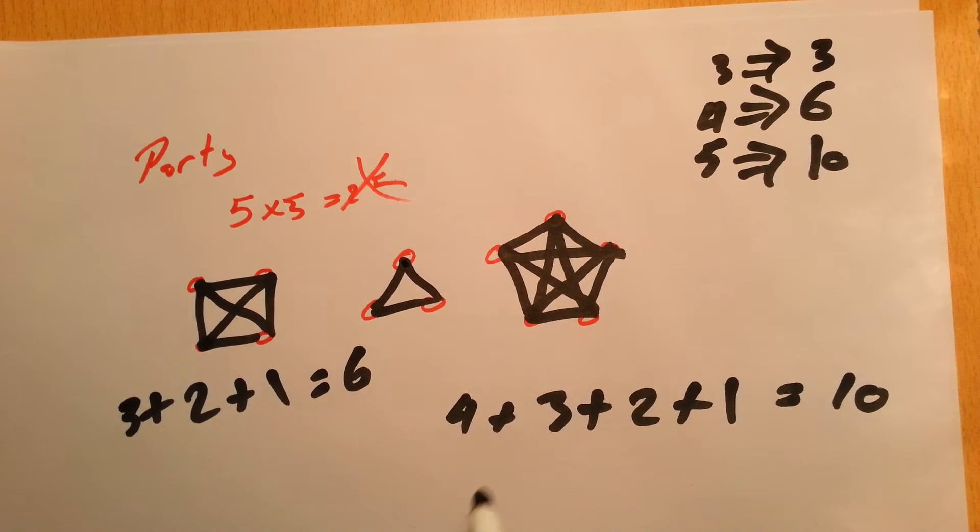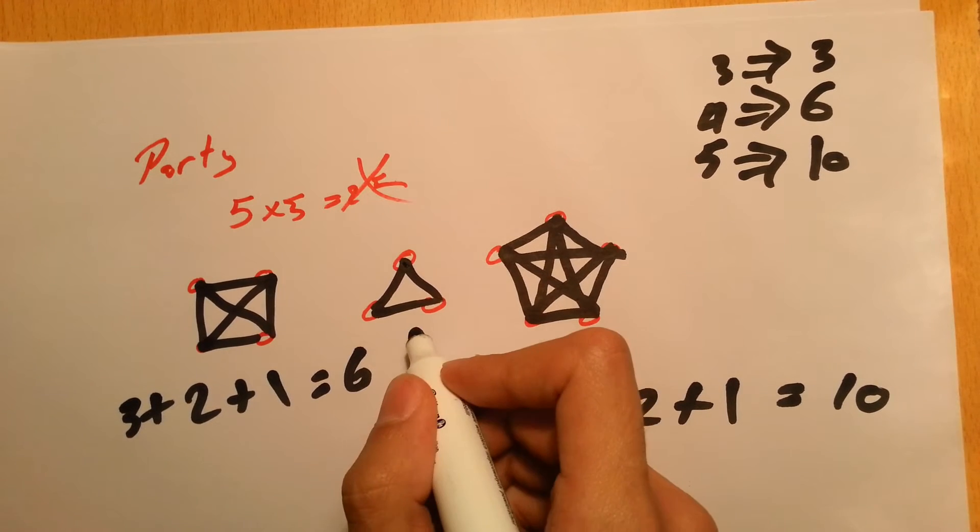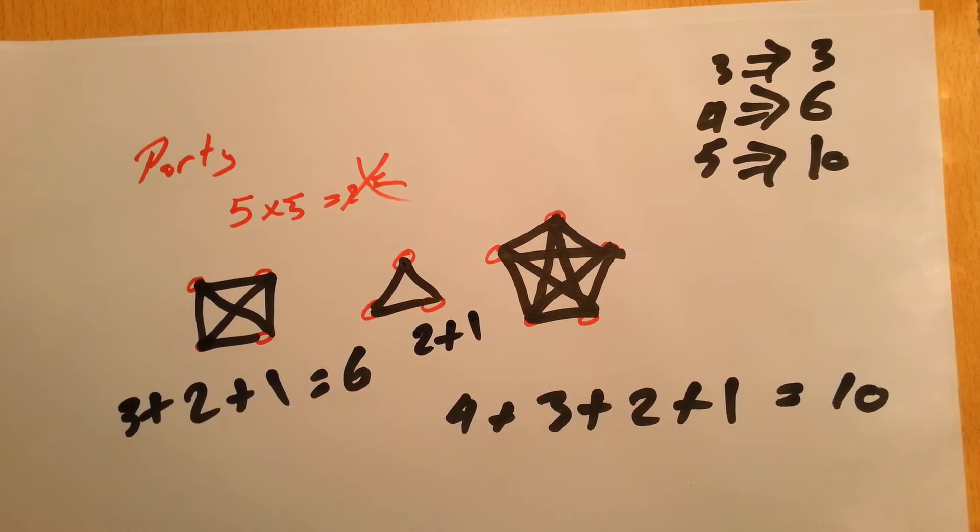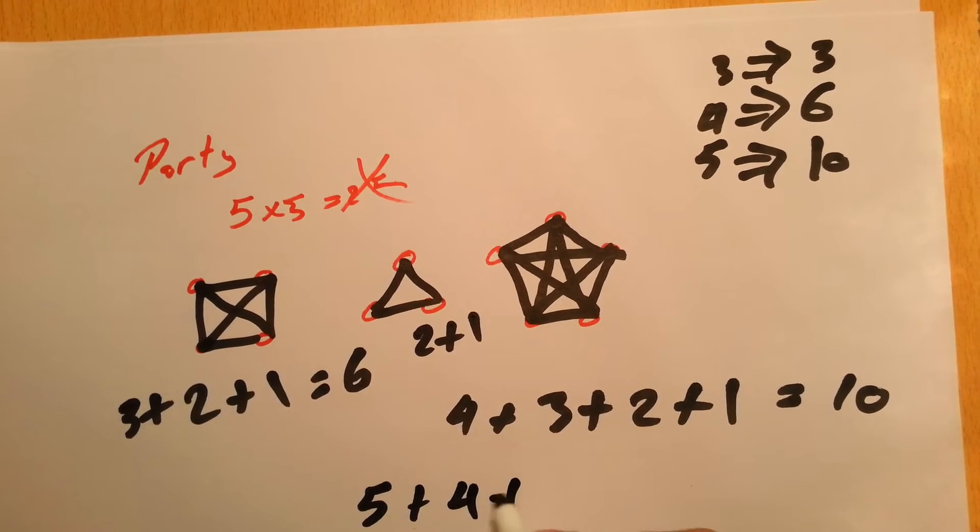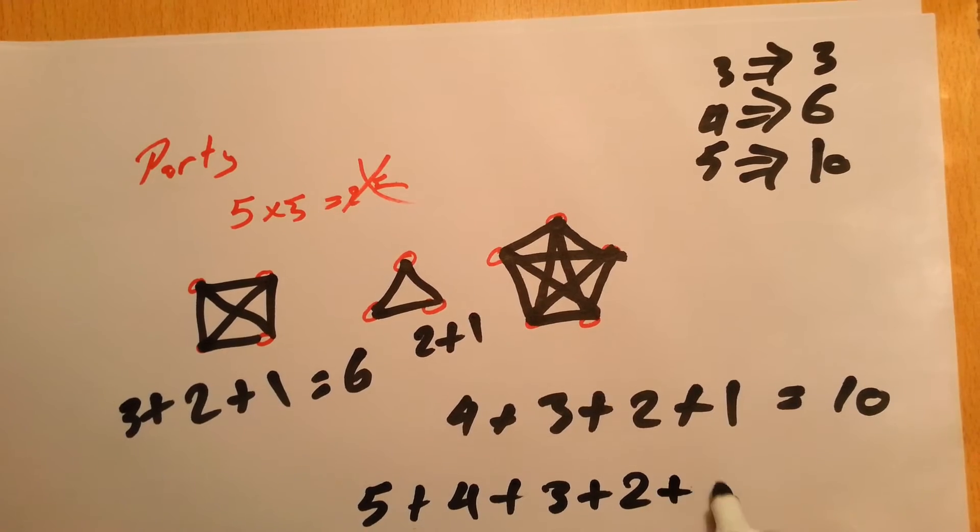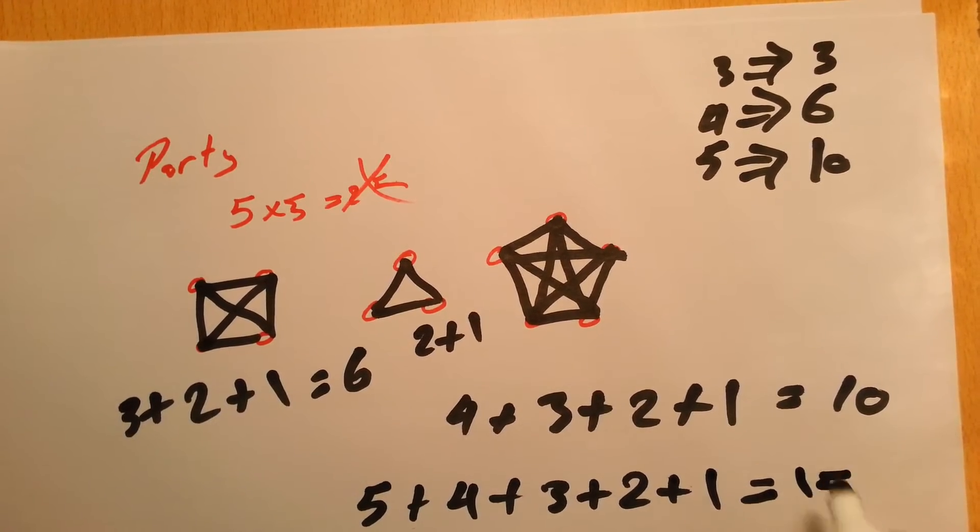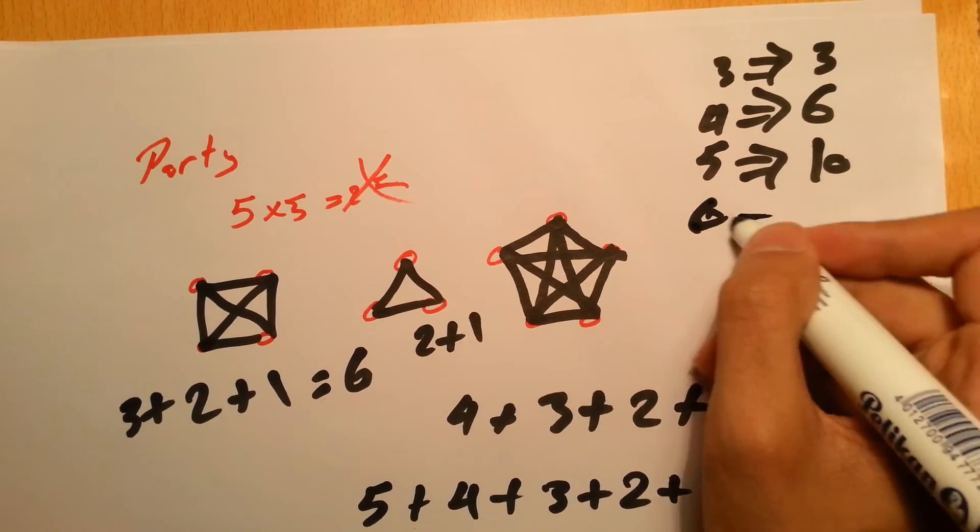So the pattern is that like we have five then we start from the lower number and add until one. Like this one was two plus one. So for six it's definitely going to be five plus four plus three plus two plus one which is fifteen. So six gives you fifteen.